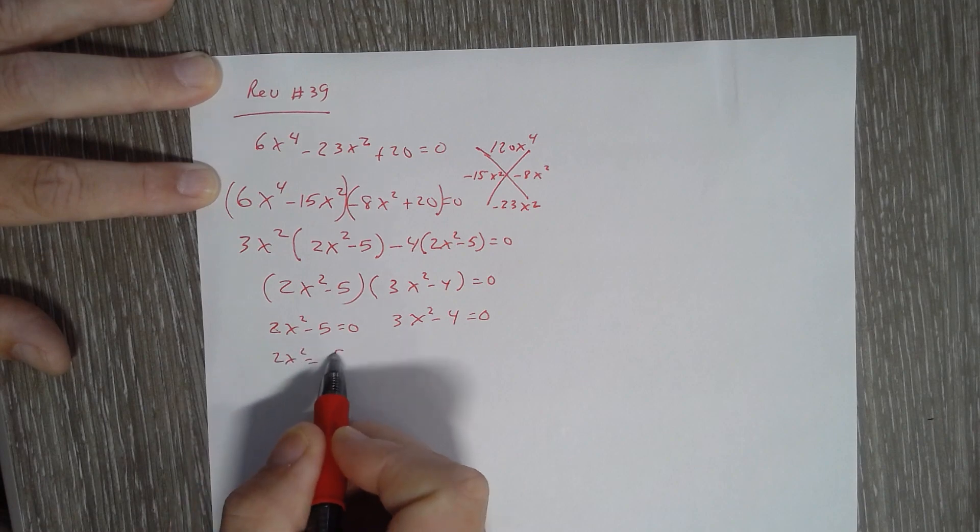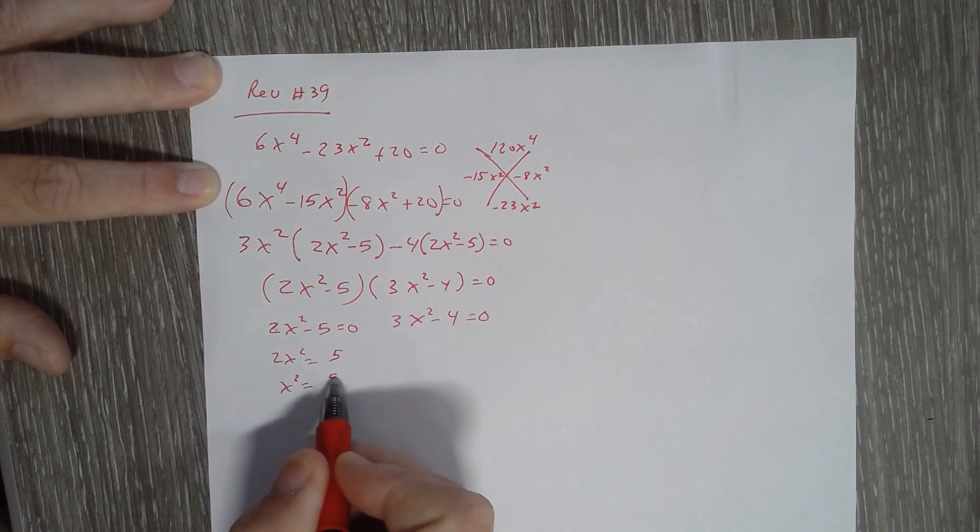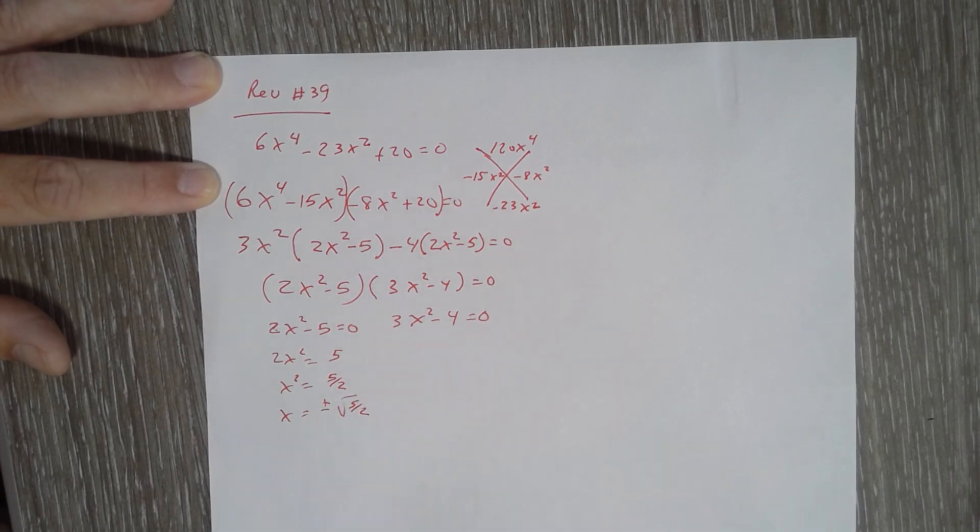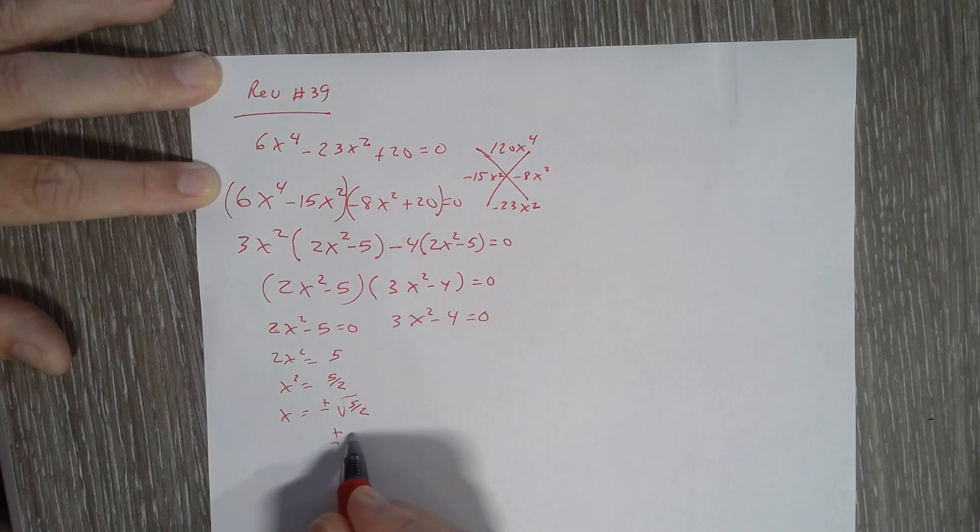So 2X squared equals 5. X squared is 5 halves. So X is plus or minus the square root of 5 halves. Now we don't leave it that way. We have to rationalize it. So I multiply top and bottom by the square root of 2, and I get square root of 10 over 2.